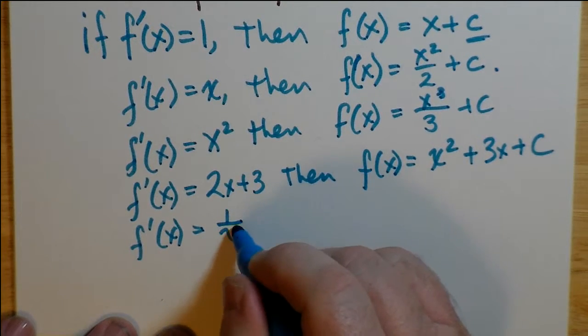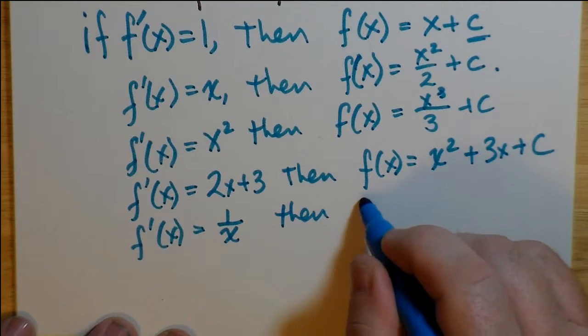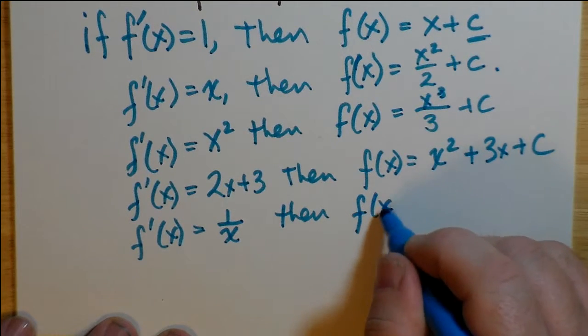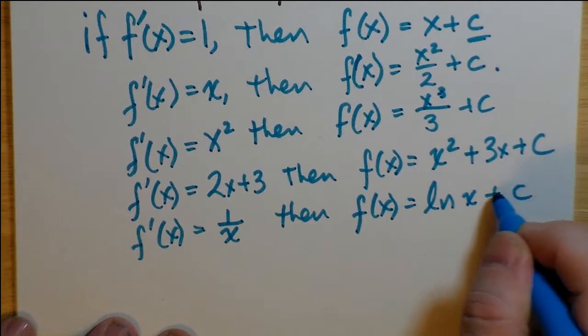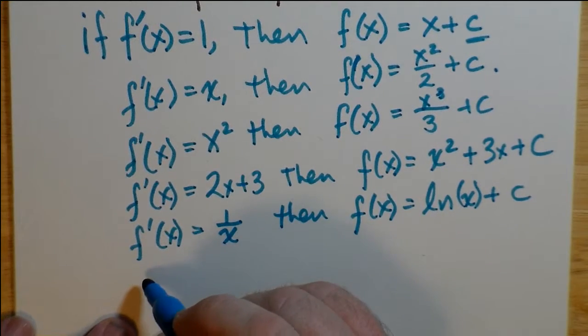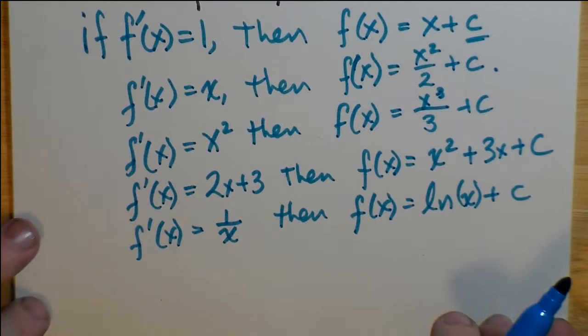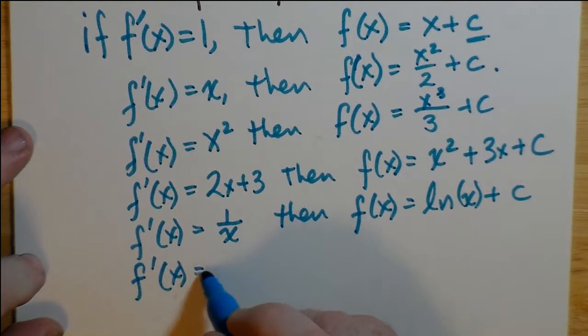And f'(x) of, say, 1 over x, an inverse or a reciprocal of x. If you learned about the derivatives of natural logs, then you would know that the natural log would be the anti-derivative, because when you derive the natural log, you get 1 over x, as its rate of change.